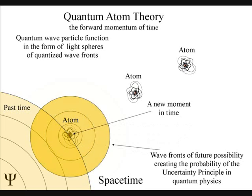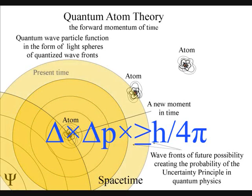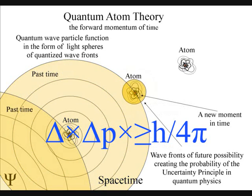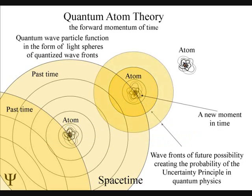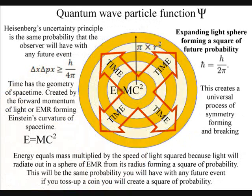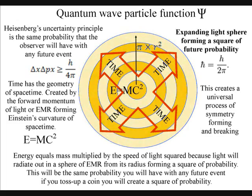This will be based on the equations and calculations that we already have and will fit in with the reality of our everyday life. In this theory, energy equals mass times the speed of light squared, because light will radiate out in spheres of electromagnetic waves from its radius, forming a square of future probability.